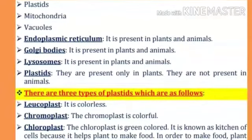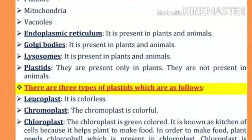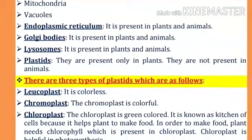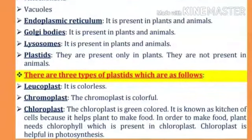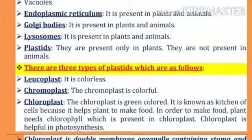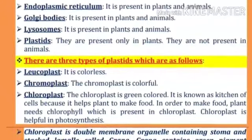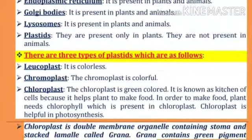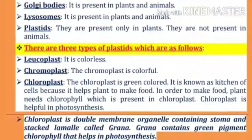There are three types of plastids: leukoplast, which is colorless; chromoplast, which is colorful; and chloroplast. The chloroplast is a green colored pigment. It is known as the kitchen of the plant and is present in the leaves of the plant. It helps plants to make food. In order to make food, the plant needs chlorophyll, which is present in the chloroplast.